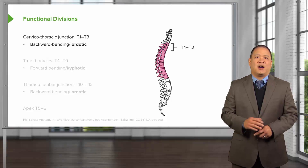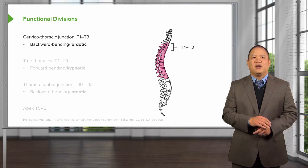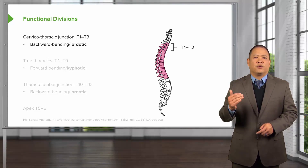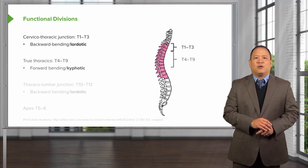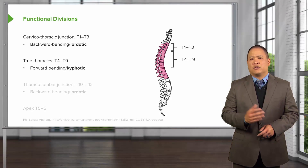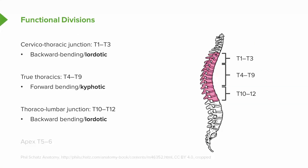We can divide the thoracic spine into functional divisions. From T1 to T3, this is the cervical-thoracic junction, and it is slightly lordotic. From T4 to T9, this is where we consider the true thoracics, and this is more kyphotic. From T10 to T12, there's a little bit more backward bending — this is where the thoracic spine starts to transition to the lumbar spine.